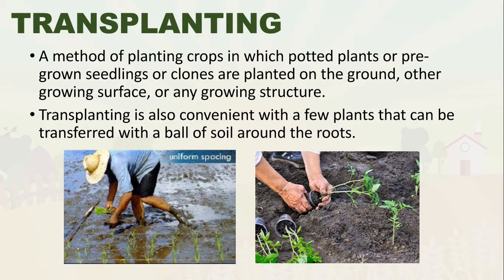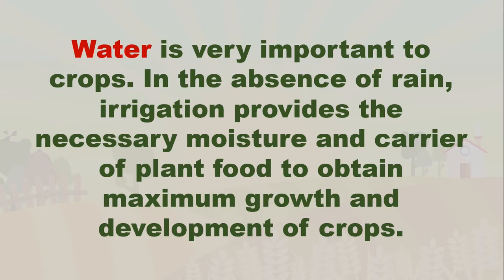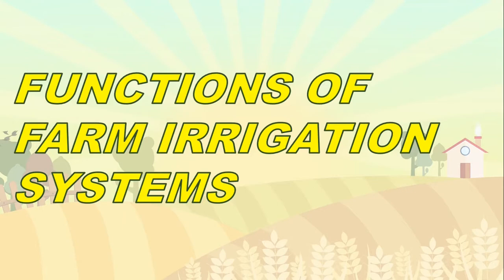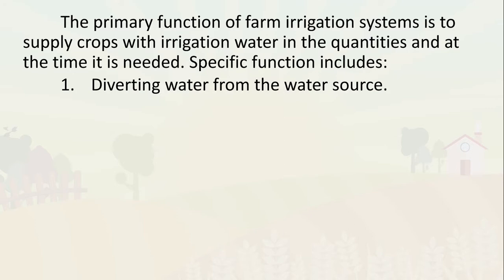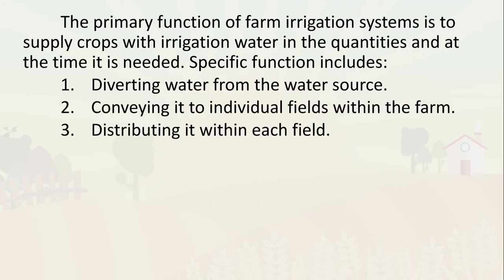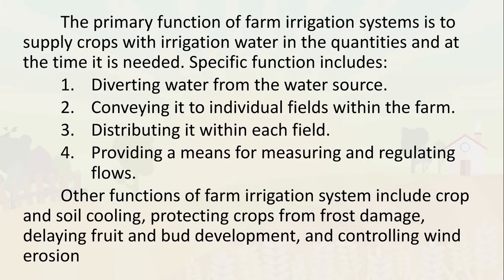The next topic is irrigation and drainage in agricultural production. Water is very important to crops; in the absence of rain, irrigation provides the necessary moisture for maximum growth and development of crops. The primary function of an irrigation system is to supply crops with water in the quantities and at the time needed. Specific functions include diverting water from the source, conveying it to individual fields, distributing it within each field, and providing a means for measuring and regulating flows. Other functions include crop and soil cooling, protecting crops from frost damage, delaying fruit and bud development, and controlling wind erosion.